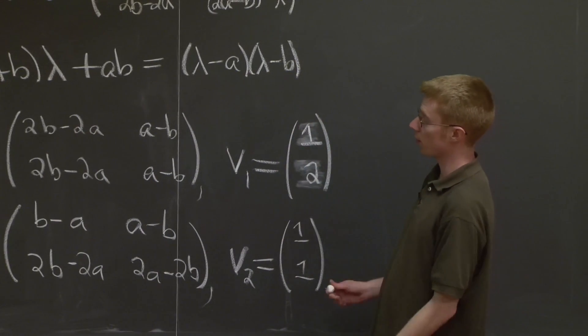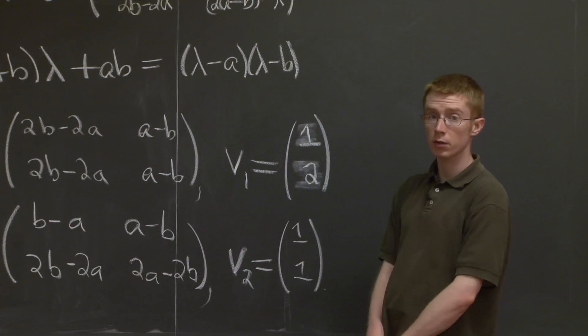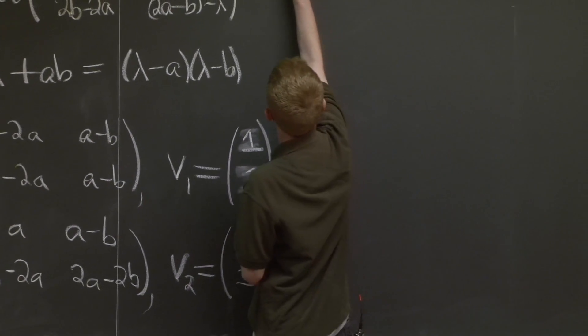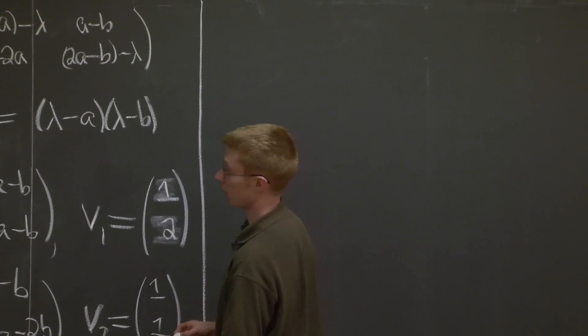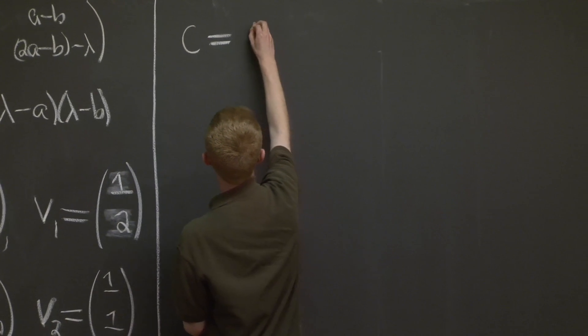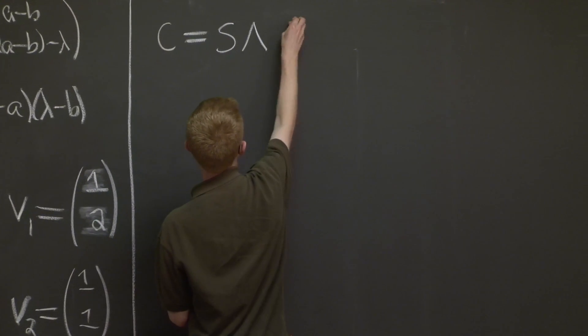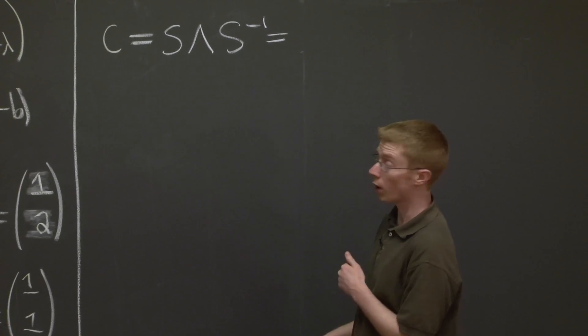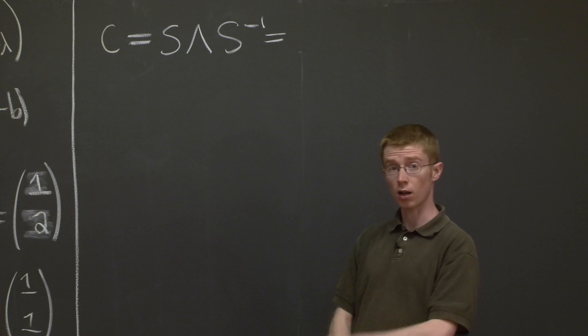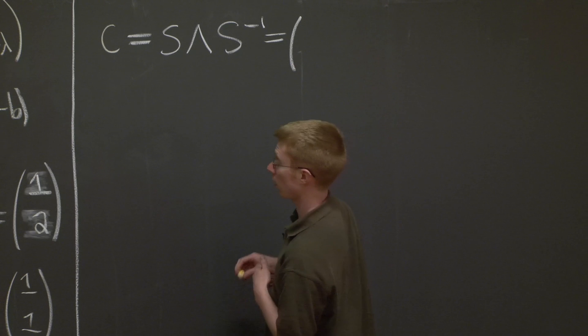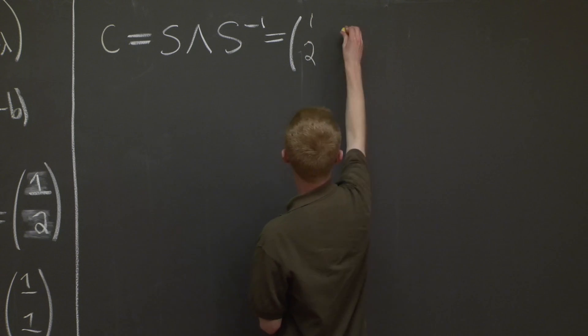Great. Now we have our eigenvalues and our eigenvectors. So now we can write C in a nice, easy way that allows us to take powers of it. So what's that way? OK. So that's C equals S lambda S inverse. So this is just what is S. Remember, S is our matrix of eigenvectors. So S is the matrix (1, 2, 1, 1).